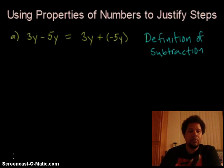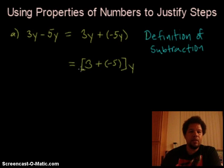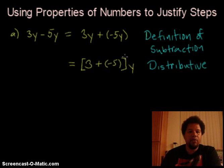Let's take a look - what's the next thing we can do? Okay, so this next step right here, we have brackets around here. We have 3 plus a negative 5 and outside the brackets we have this y. This is an example of using the distributive property. The distributive property allows us to pull out or factor out a common factor from two terms so that it's multiplying times the quantity that is being added or subtracted together. So this is the distributive property.